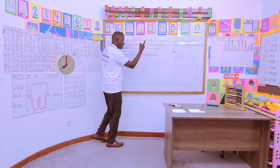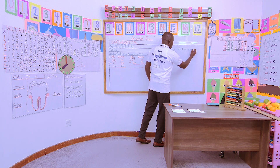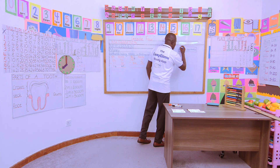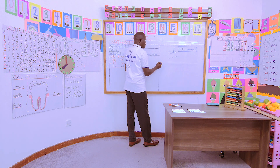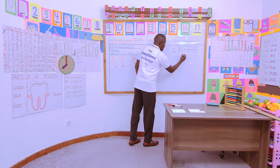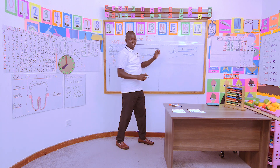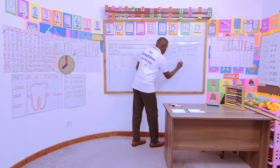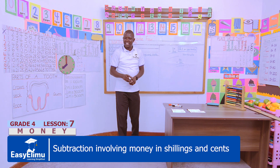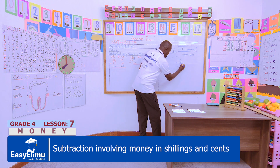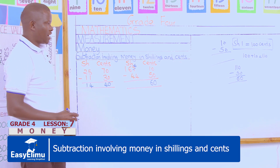Now we regroup here: we have borrowed one shilling, and one shilling is equivalent to 100 cents. So we convert that borrowed shilling to 100 cents, then add it to 10 cents: 100 cents plus 10 cents gives us 110 cents. Now 110 take away 50 — John, what are you remaining with? You are remaining with 60. So our answer here in the cents column is 60 cents.